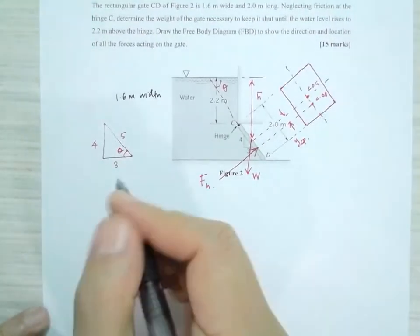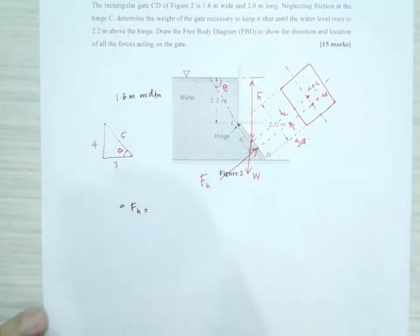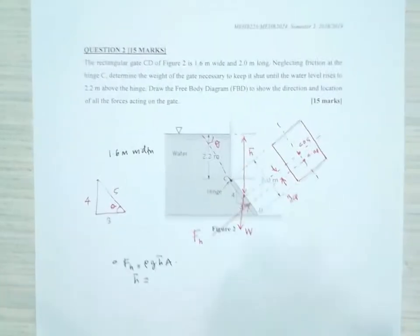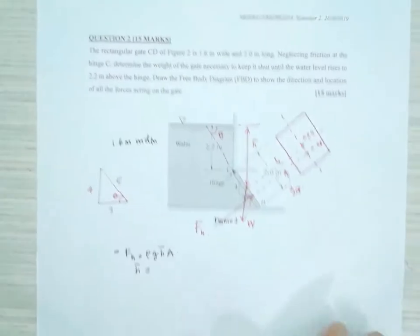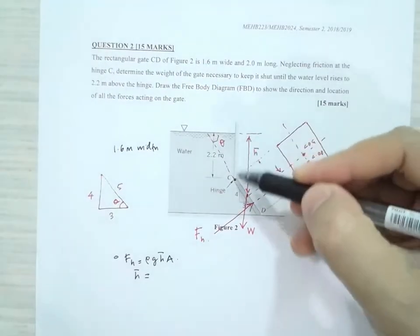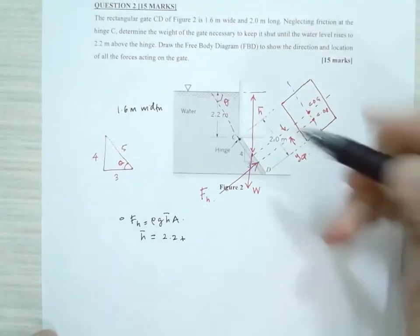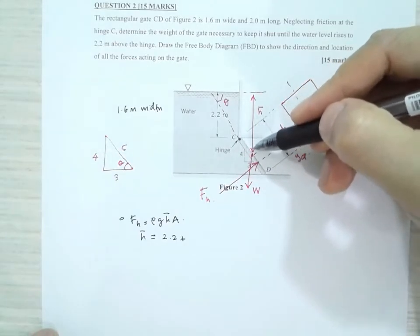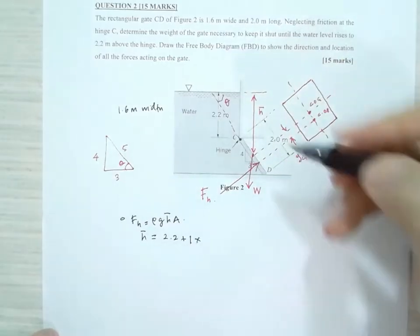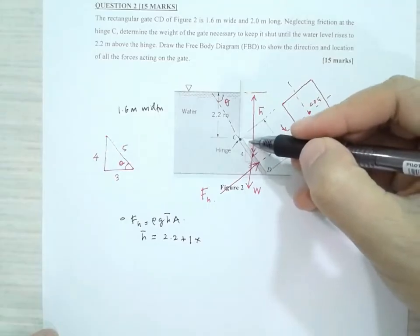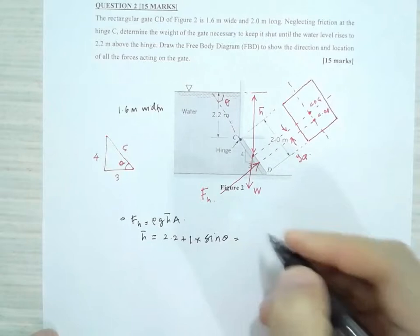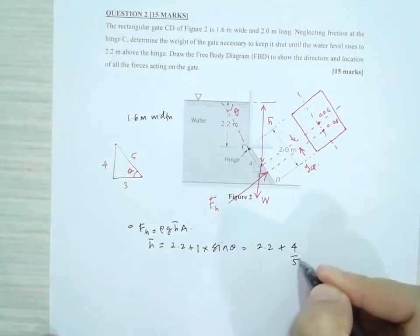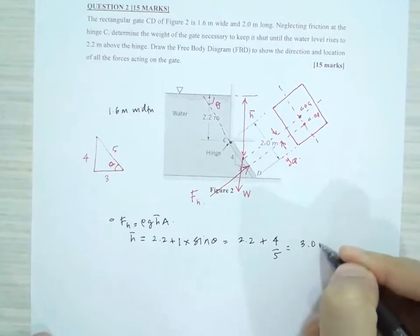In order to calculate the hydrostatic force F_H, the formula is ρgH̄A. We know that H̄ will be the vertical distance from the center of gravity to the water level. So it will be equal to 2.2 plus this height here. From here to here is 2, so this must be 1 multiplied by sin θ. So it's equal to 2.2 + 1 × (4/5) = 2.2 + 0.8 = 3.0 meters.